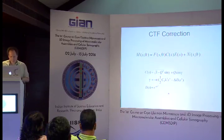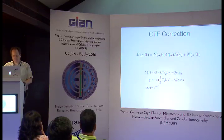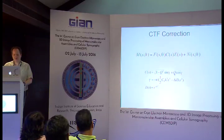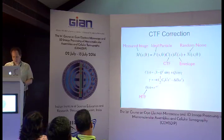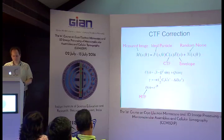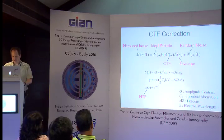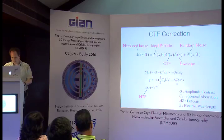Now let's talk about the CTF correction process. The primary equation involves a sine-cosine term representing phase contrast and amplitude contrast respectively, where Q is the coefficient defining how much amplitude contrast you have — typically set to about 10%, or 0.1 in the equation. Gamma defines how much phase shift we have in the sine and cosine functions. We have our measured image equal to the Fourier transform of the perfect ideal particle, multiplied by the CTF and an envelope function estimated as a pure Gaussian, plus noise. The other variables include amplitude contrast, spherical aberration, the wavelength of the electrons, defocus, and s is the spatial frequency axis in Fourier space.